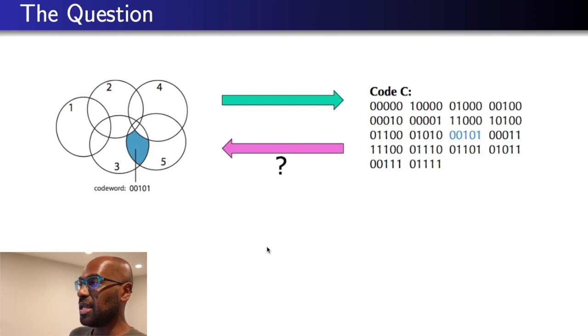If you take a look at the picture on the left, it has a bunch of intersections, and on the right we have the entire list. For example, this binary string 00101 appears highlighted in blue on the right.